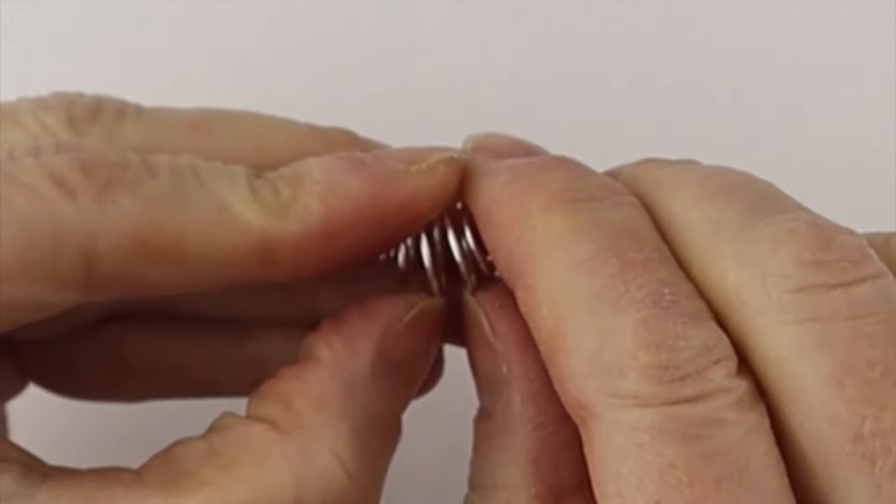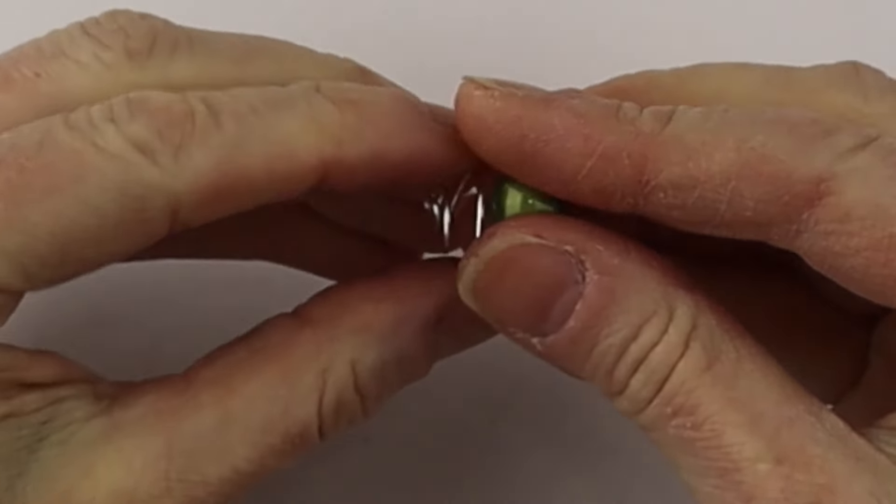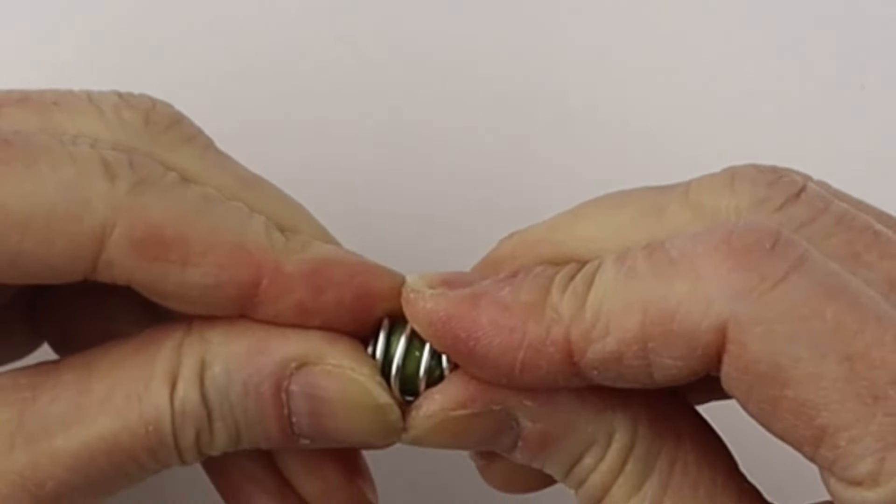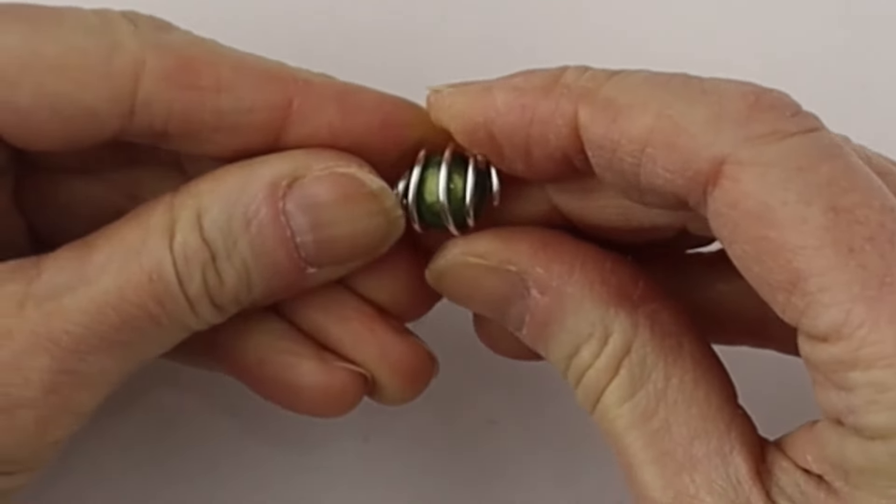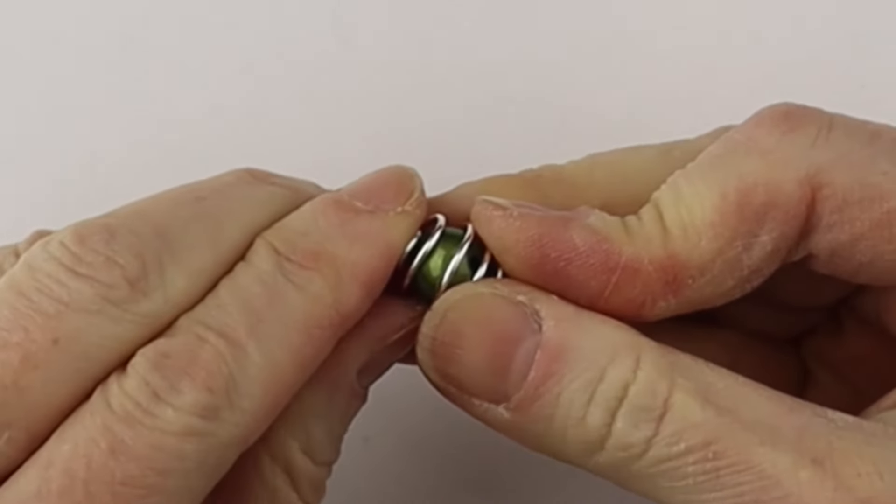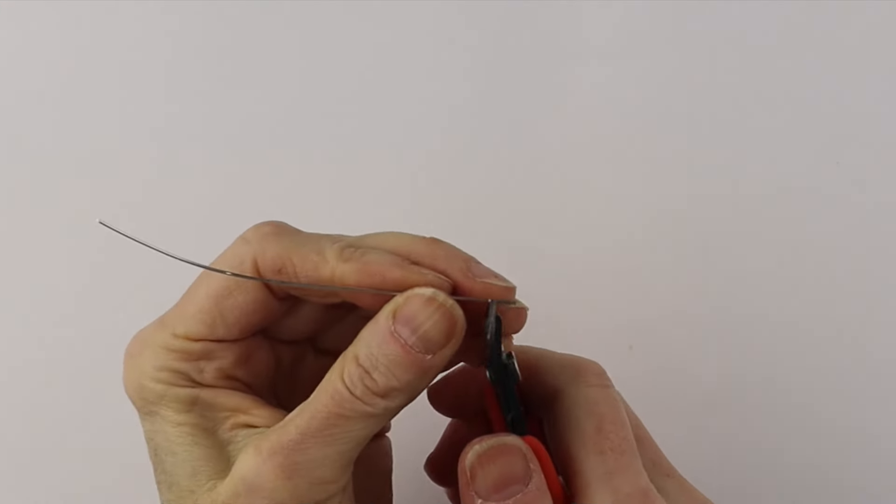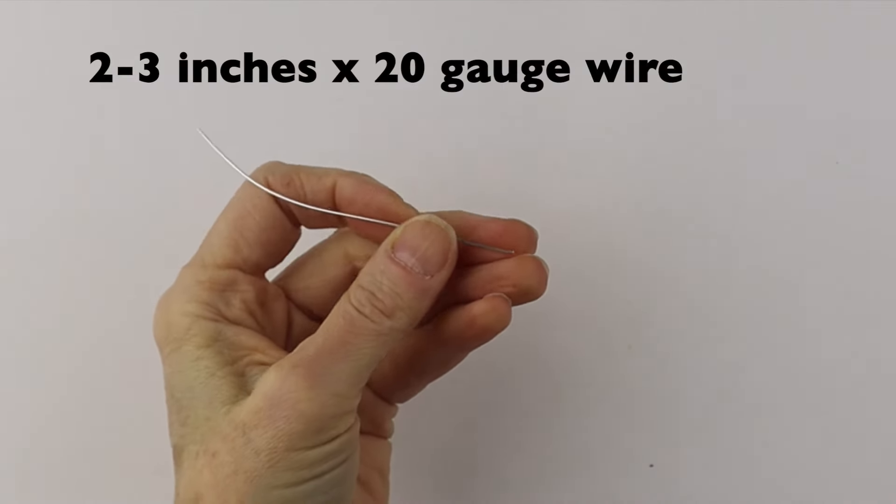We're going to push it down and split it open. Pop in your bead. This is about a 10 millimeter bead. You can use 10-12 millimeters however you like, and once it's in there, we're going to get a piece of 20 gauge wire.